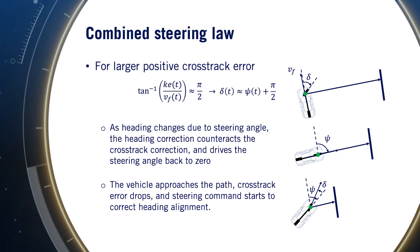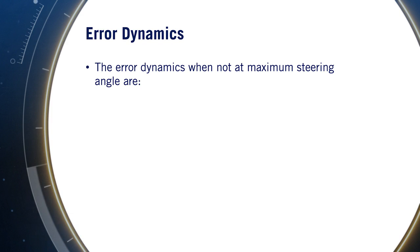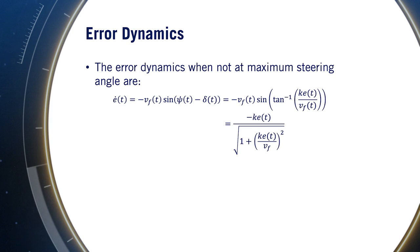But how does this control actually converge to the path? As it turns out, it's possible to use our expression for the cross-track error dynamics defined in the first video of this module to get a sense for the convergence characteristics. Recall that the rate of change of the cross-track error for a front axle reference point is equal to minus the forward velocity times the sine of the heading minus the steering angle. If we substitute in the Stanley control law without limits, we get the final expression. Using a trigonometric identity for simplifying the sine of the inverse of tan, we can find that the rate of change of the cross-track error evolves according to minus gain k times the cross-track error divided by the square root of 1 plus ke over vf squared.